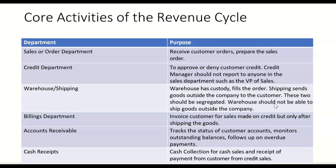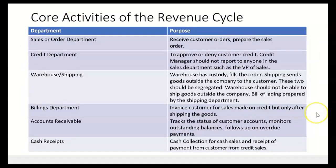Warehouse should only be able to move goods around within the company. It's the shipping department that ships the goods to the customer. When that happens, the second document in the cycle is created by the shipping department, known as the bill of lading. On the exam you'll have to know these documents and which department prepares them. The sales order is the first document, prepared by the sales department. The second is the bill of lading, prepared by the shipping department — but only if the customer has good credit.